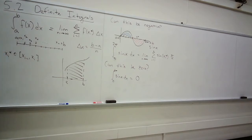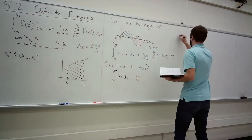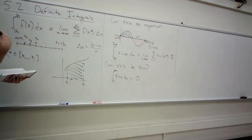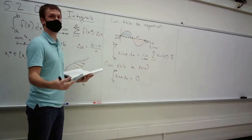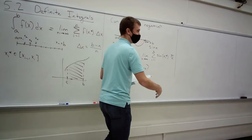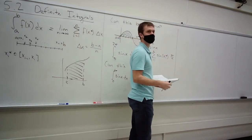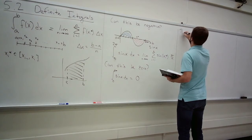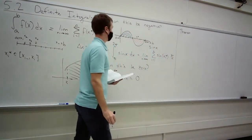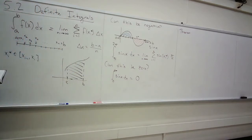Now we get into an area similar to what we looked at with derivatives — when does a derivative exist and when doesn't it? We classified functions: if a function is continuous, is it differentiable? We boiled down those necessary properties. Similarly, the next theorem gives you sufficient conditions for something to be integrable.